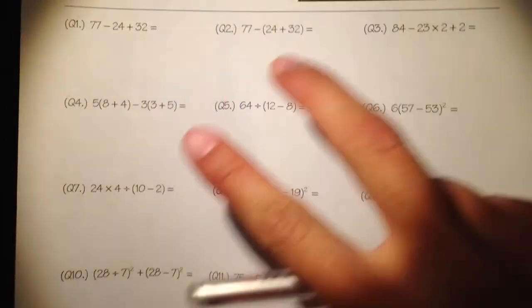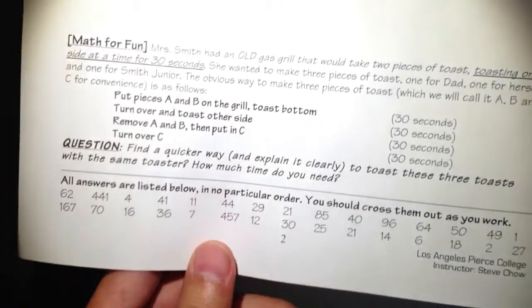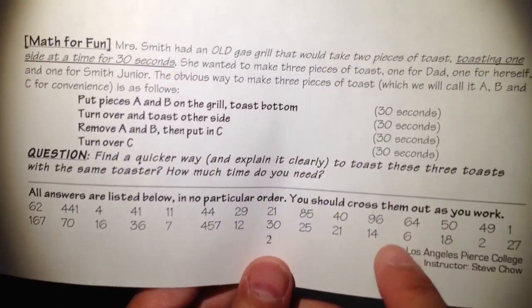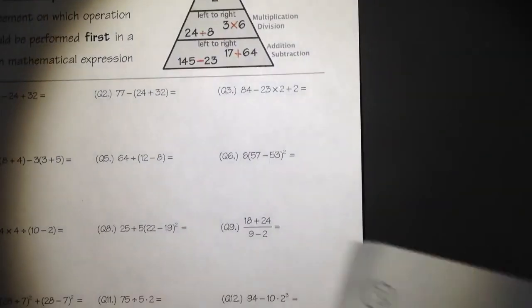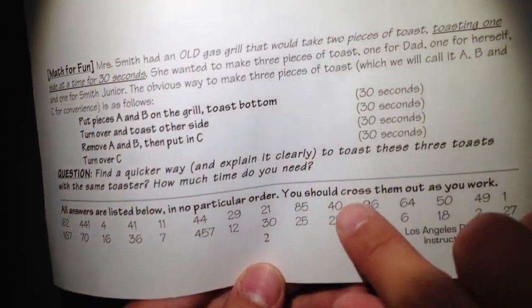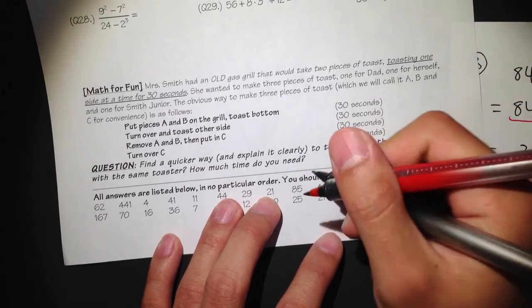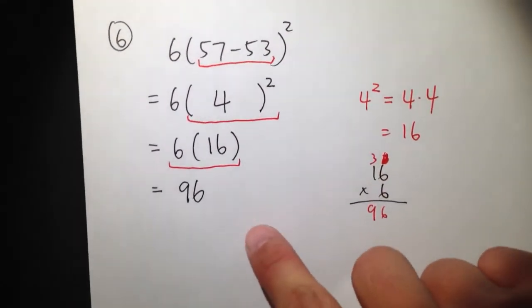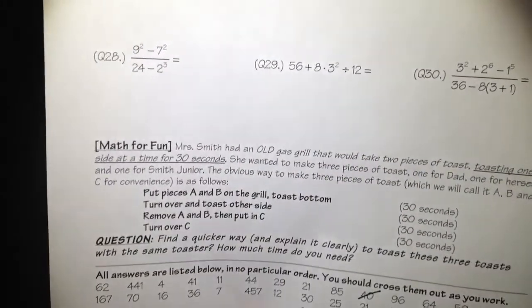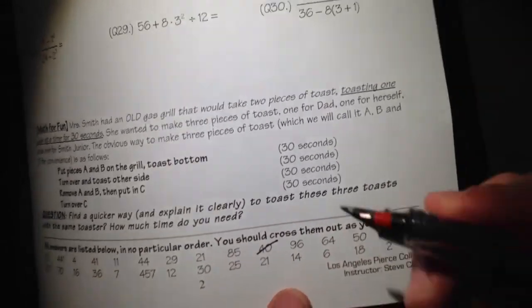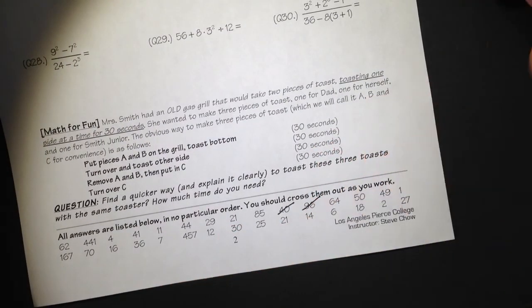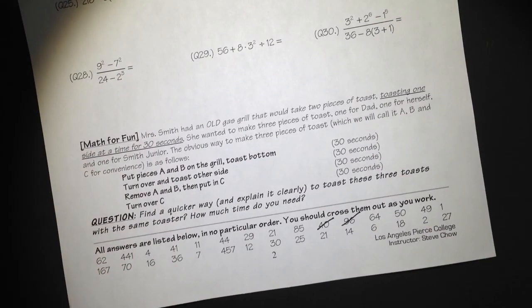Let me show you my worksheet. I have these questions, and on the bottom of the second page I have the answer list. For question 3, I got 40 — and if you flip to the second page you should be able to find 40. You should cross out the answers as you work through them. We can cross out the 40. For this question we got 96, so you can look for 96 — it's right next to it. This is just one way to ensure you're doing the questions right.